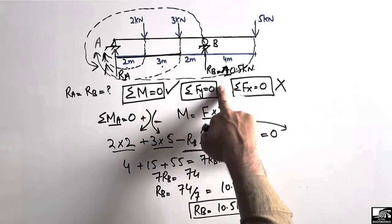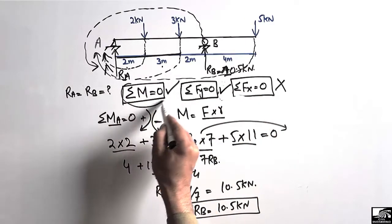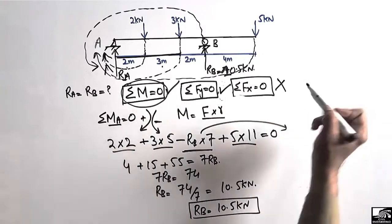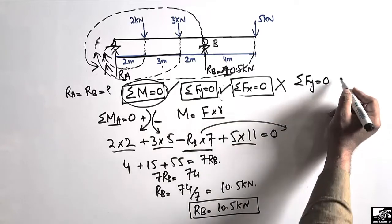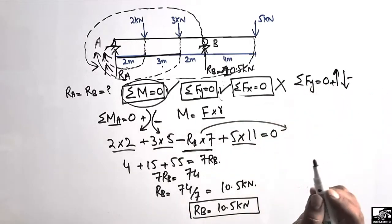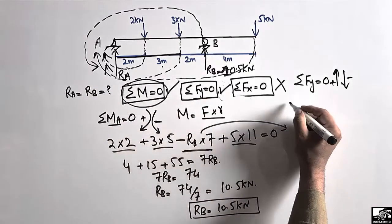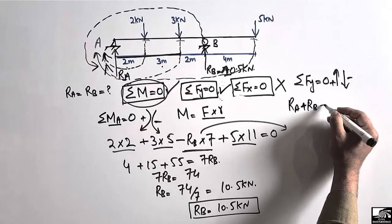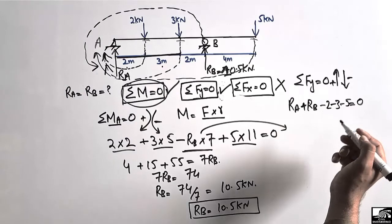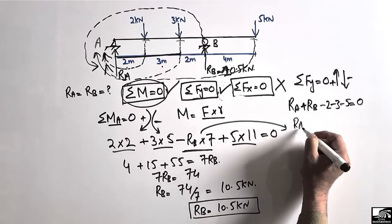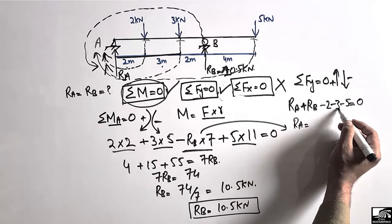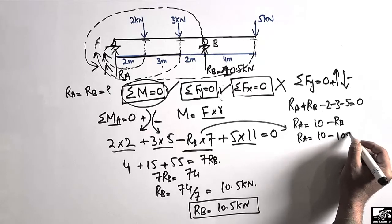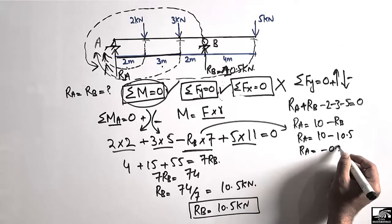Now that we have only one unknown, RA, we can use the summation of vertical forces equal to zero. Upward forces are taken as positive and downward forces are taken as negative. The upward forces are RA and RB; the downward forces are 2 kN, 3 kN, and 5 kN. So: RA + RB − 2 − 3 − 5 = 0, which gives RA = 10 − RB = 10 − 10.57, so RA = −0.5 kN.